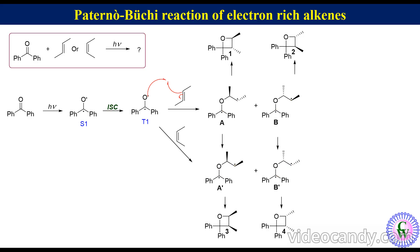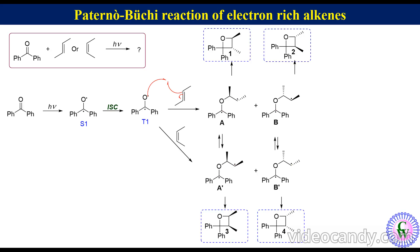If the reactant is cis-2-butene, after reaction with the excited triplet state, it gives A' and B', which after rotation through the C–C bond give conformational isomers A and B. In this case too, A, B, A', and B' cyclize to produce compounds 1, 2, 3, and 4 in the same percentage. Thus, we can see that irrespective of the stereochemistry of the starting alkene, the same products are formed with the same percentage. So this reaction is non-stereospecific.